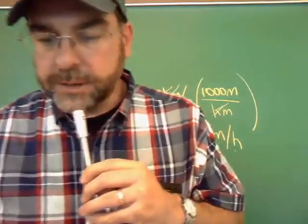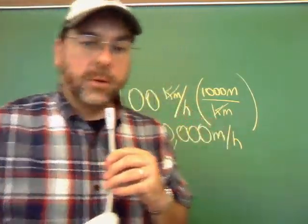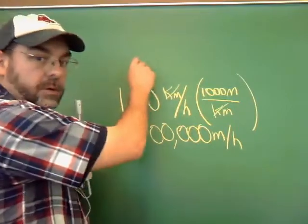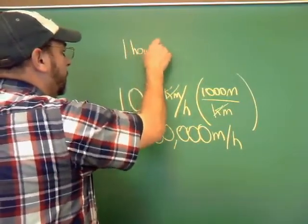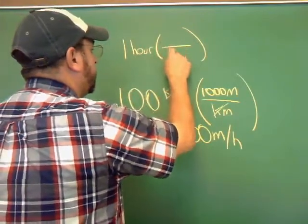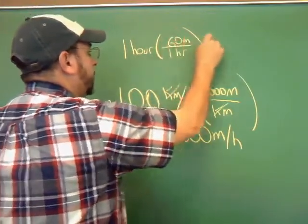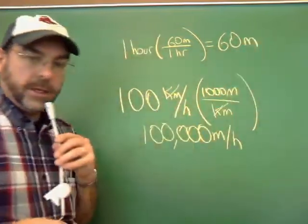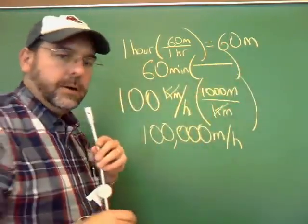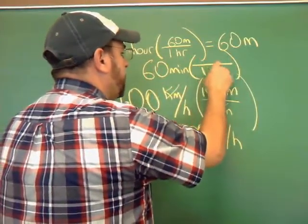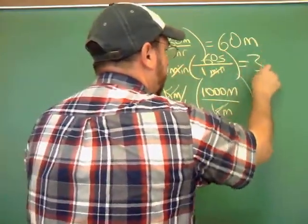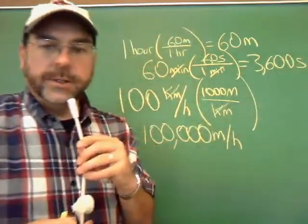So 100,000 meters per hour. Well, that's not what it was asking me for. It was asking me the velocity in meters per second. Alright, so one hour is 60 minutes. So I want to cancel out. 60 minutes. How many seconds are there in a minute? So one minute is 60 seconds. Minutes will cancel out. 60 times 60, I know that it's 3,600 seconds.